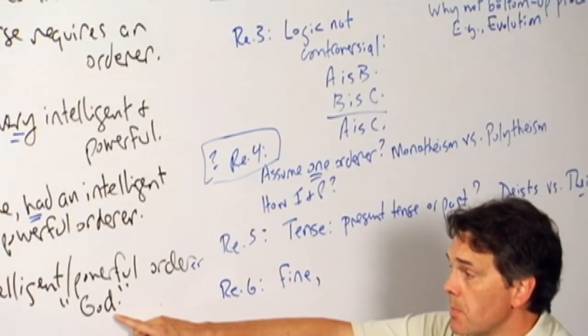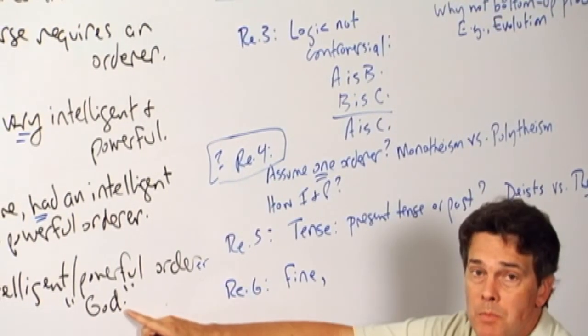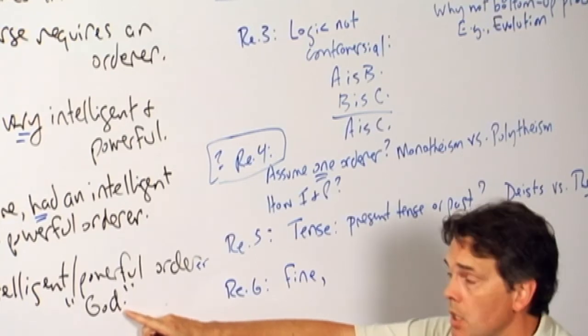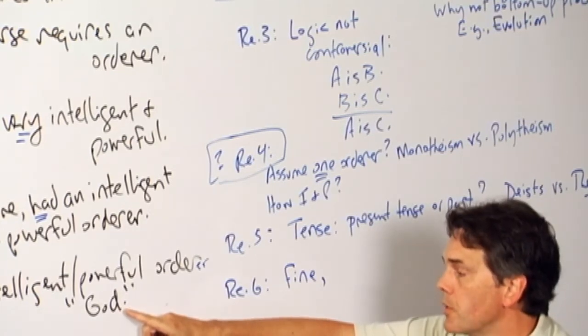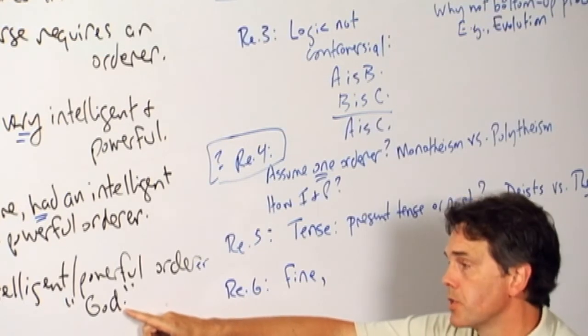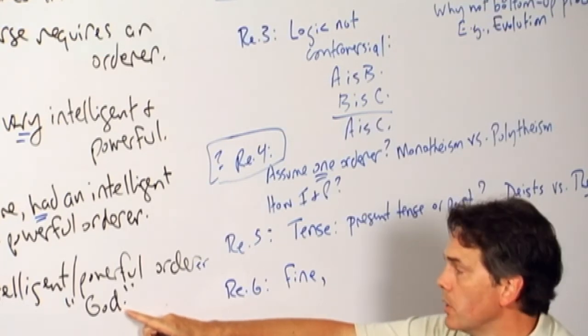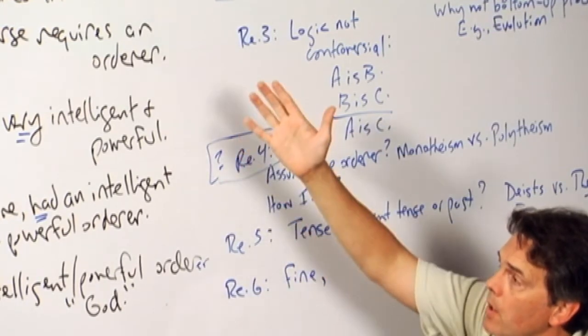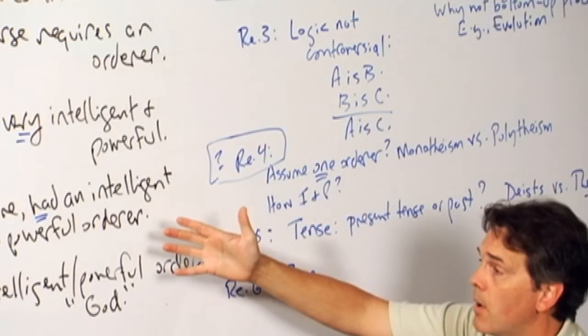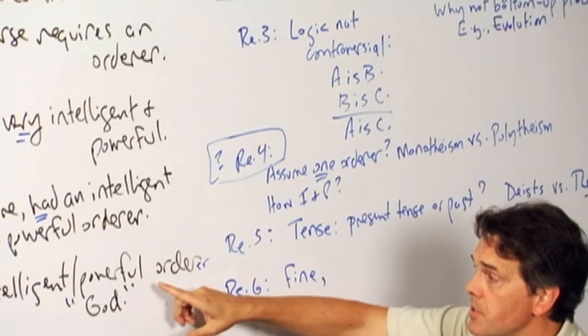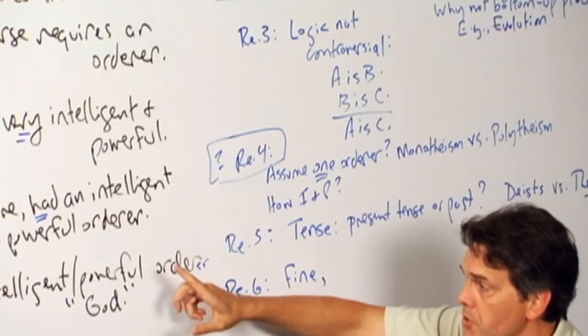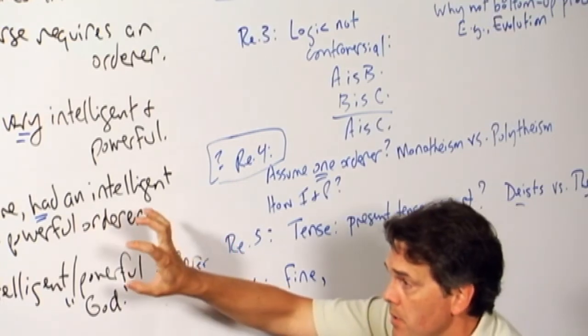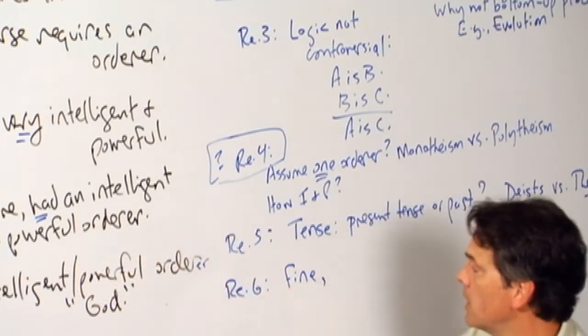So for example, most standard conceptions of God will also include within them some notions of God's goodness or some notion of God's perfection or some notion of God's personal relationship or potential personal relationship to us as individuals. And people who are critical of the argument will make the point that nothing in the argument that we have so far necessarily implies that this is a moral God or a personalized God and so forth.